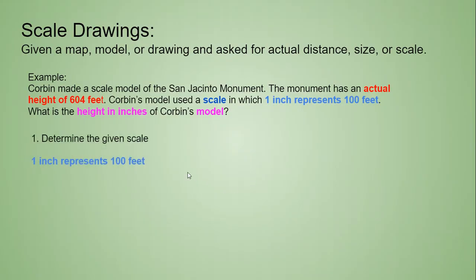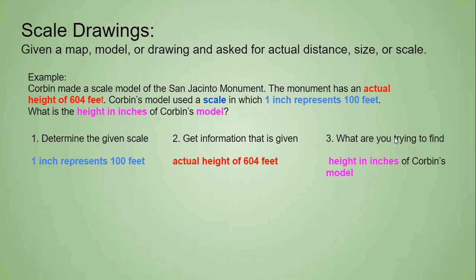First, we're determining the scale, which is 1 inch equals 100 feet. Then we need the given information. So the actual height is 604 feet of the monument. And then what are we looking for? We're looking for the height in inches for the model. So we're given the actual and we're looking for a model height.